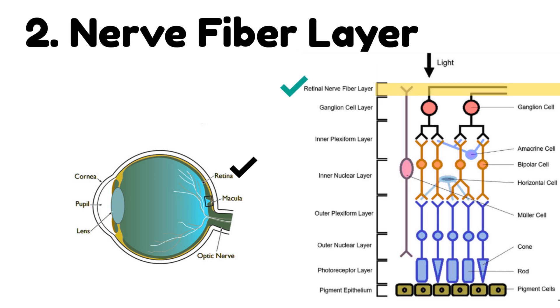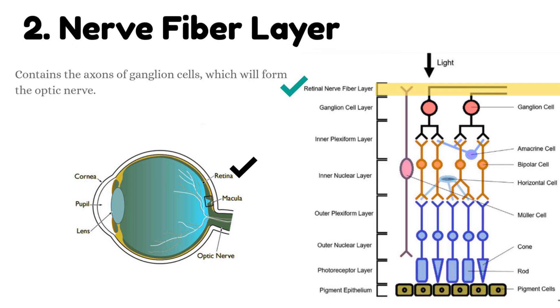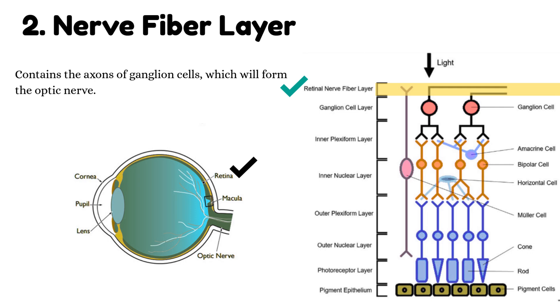Number 2: Nerve fiber layer. This layer contains the axons of ganglion cells, which will form the optic nerve.